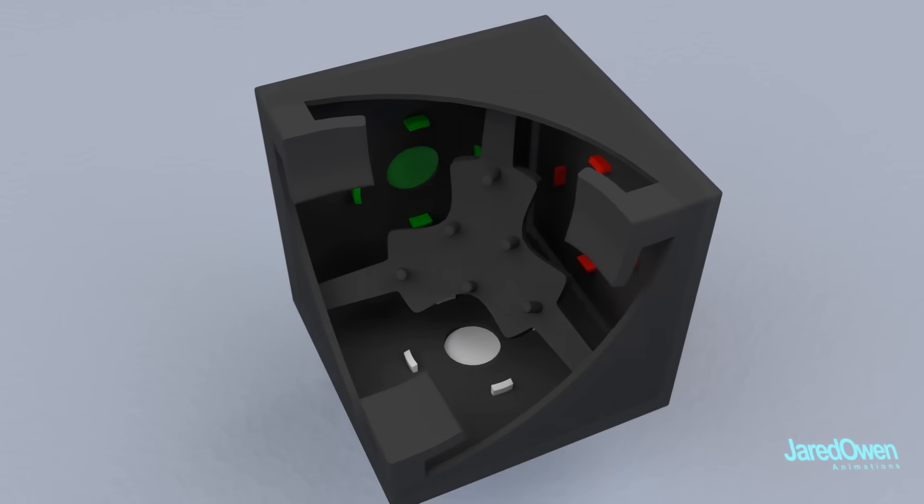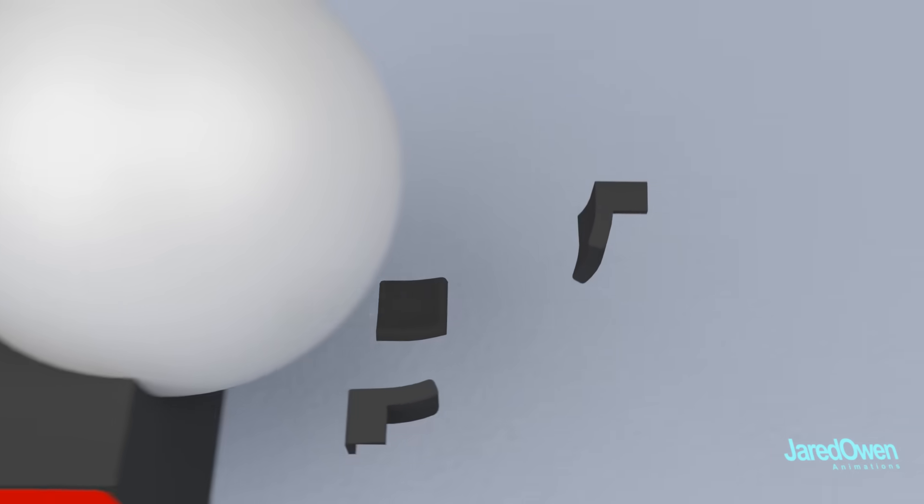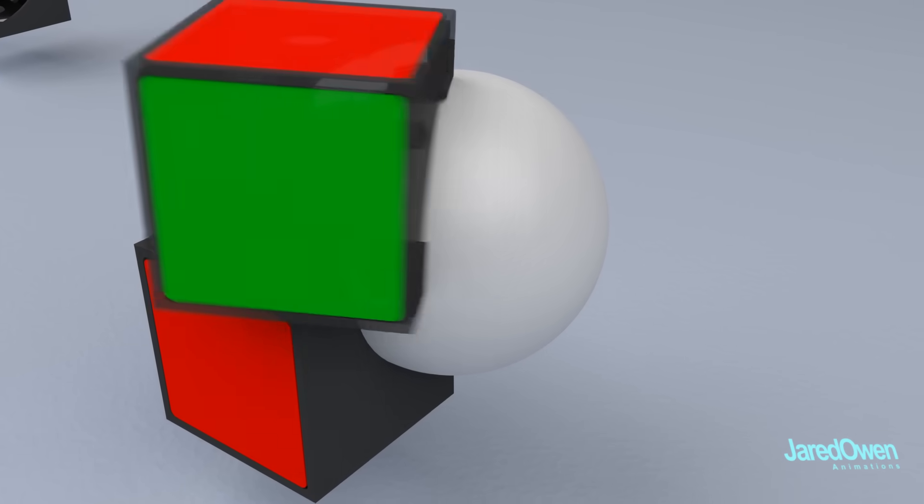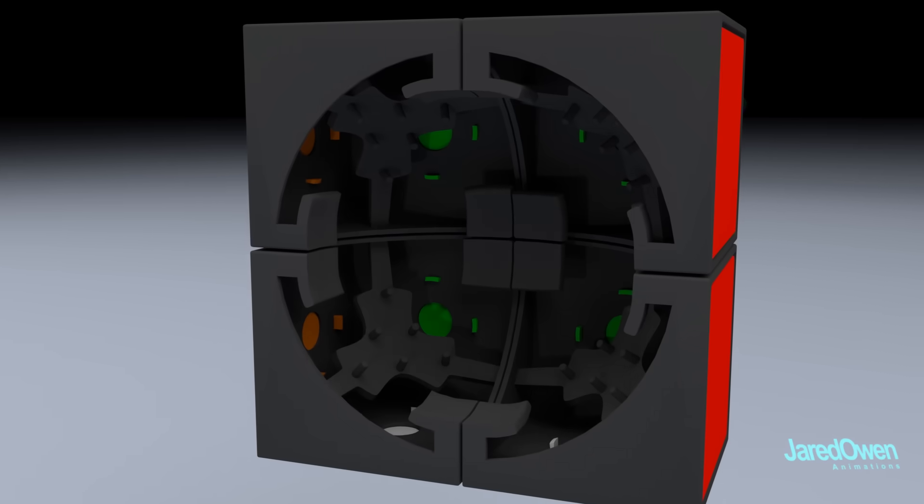On the inside, you'll see three places where there is plastic extending outwards. This is what makes contact with the center sphere. This makes even more sense when you look at a few of the corner pieces put together.